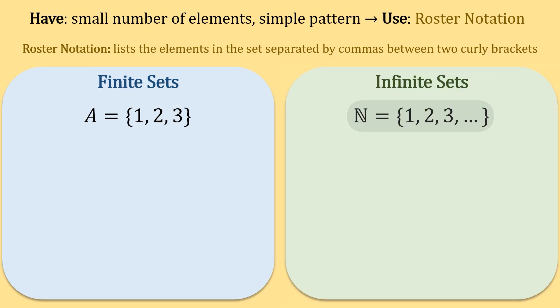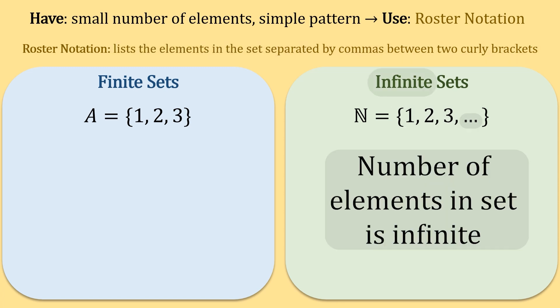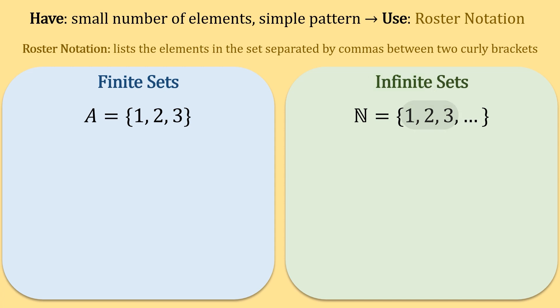This set N, the set of natural numbers, is in roster notation but has an infinite number of elements. Notice the pattern established by the first three elements. We see positive numbers increasing by one, and what we do is we imagine this pattern continuing towards positive infinity.